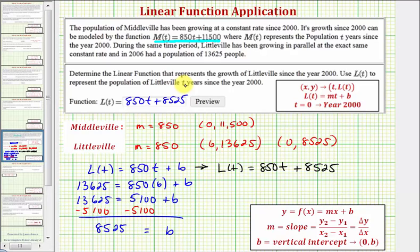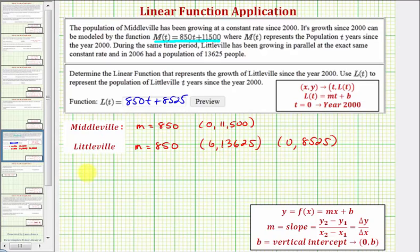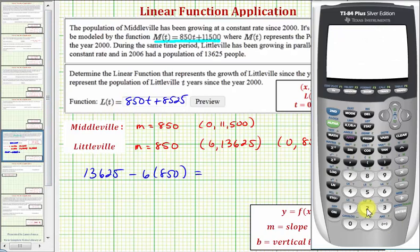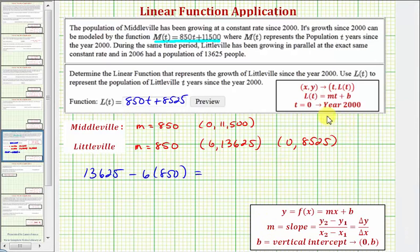Now I do want to show another way that we could have found the population when t = 0, the population of the year 2000. We knew the population in the year 2006 was 13,625. If it's growing at a rate of 850 people per year, if we wanted to go back six years to the year 2000, we could subtract six times 850 and get the same result of 8,525. Let's go ahead and show that. 13,625 - 6 × 850 gives us the same result of 8,525 for the vertical intercept, which is the population in the year 2000.